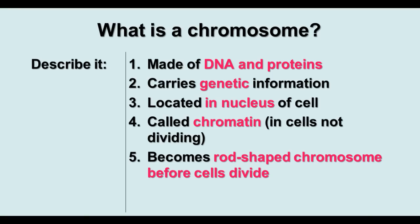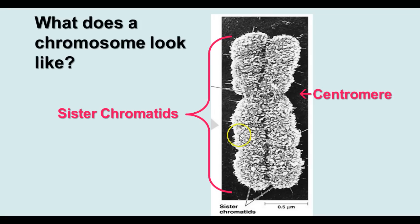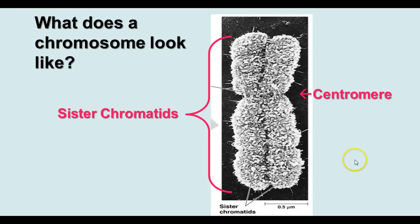This is a scanning electron micrograph of chromosomes. This one is composed of two sister chromatids joined together with the centromere, and it's just all the DNA that's coiled up very tightly.